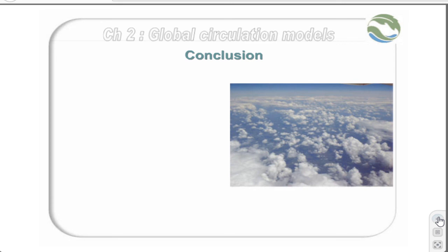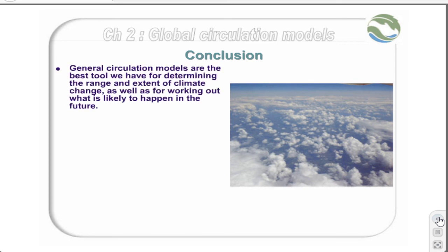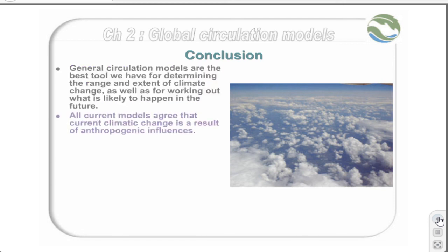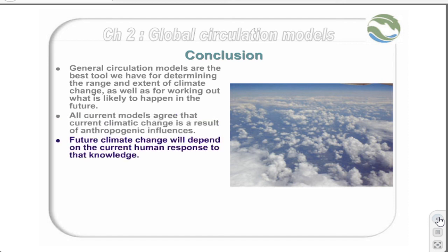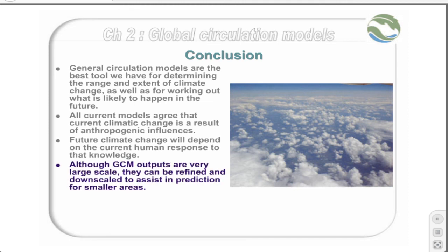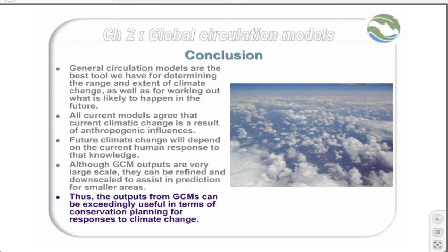There are several things to say in conclusion to this lecture. General circulation models are the best tool we have for determining the range and extent of climate change, as well as for working out what is likely to happen in the future. All current models agree that current climate change is a result of anthropogenic influences, and future climate change will depend on the current human response to that knowledge. Although GCM outputs are very large-scale, they can be refined and downscaled to assist in prediction for smaller areas and for small-scale conservation planning. Thus, the outputs from GCMs can be exceedingly useful in terms of conservation planning for responses to climate change.